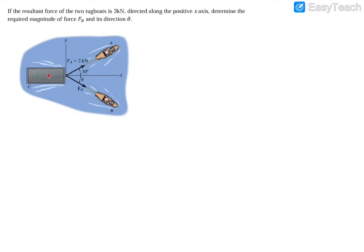All right guys, so in this example here, we have a load here, and we have two boats pulling at that load. So we have boat A pulling at a force of two kilonewtons, and that's 30 degrees above the horizontal.